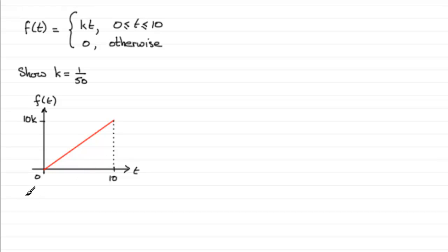Because we know that the area equals 1. And so the area of a triangle is just going to be the base, 10 times the height, so that would be 10 times 10k divided by 2, base times height, divided by 2 equals 1.